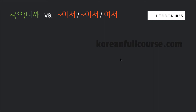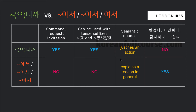Both are used in different contexts. Take a look at this comparison table. 니까 can be used in sentences where you make a request, invitation, or command, and you can combine it with future and past tense suffixes. But you cannot use tense suffixes with 아서/어서/여서, even when talking about past or future, and you cannot use them when giving commands, requests, or invitations. There is also a semantic difference: use 니까 when you want to justify your actions, and use 아서/어서/여서 when you just want to explain a reason in general. Also, when talking about emotions, use 아서/어서/여서 instead of 니까.